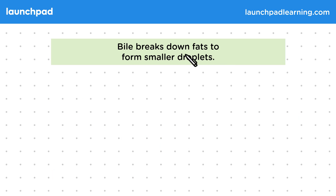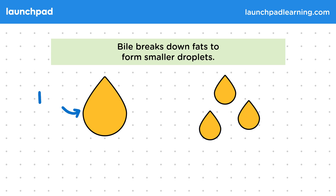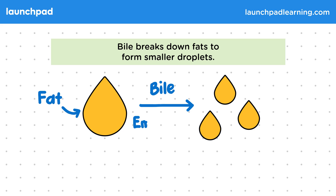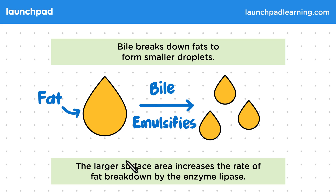Bile breaks down fats to form smaller droplets. This large yellow droplet represents fat — when it comes into contact with bile it breaks down into smaller droplets. We say that the bile emulsifies fat. This is just a scientific word that describes how bile breaks the fat down into smaller droplets.